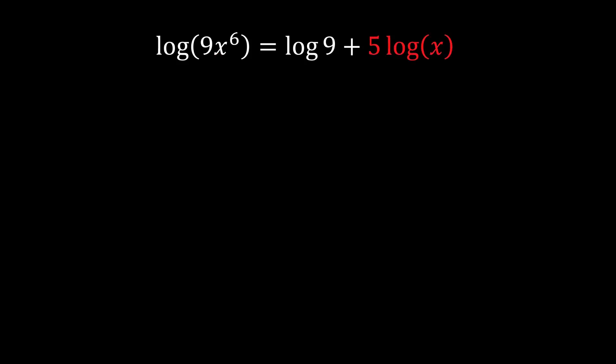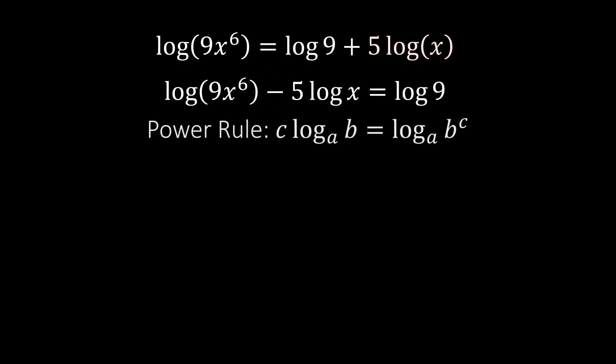So what I mean by that is we're going to drag it on the other side, which should turn into negative. Then we're going to use the power rule to bring the c term, which is the 5, as the exponent.